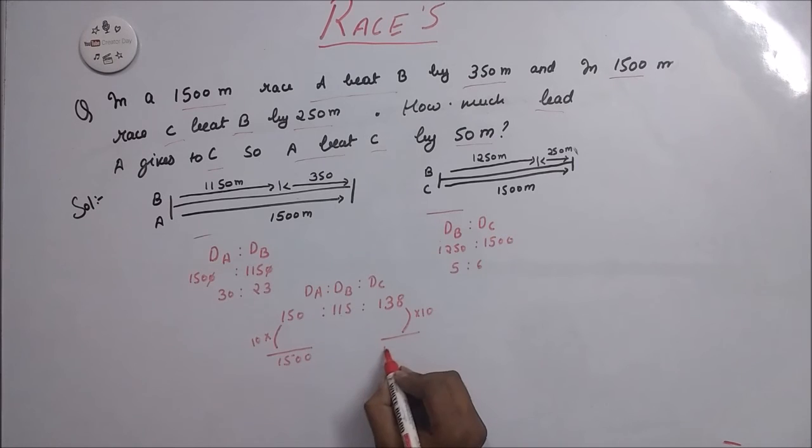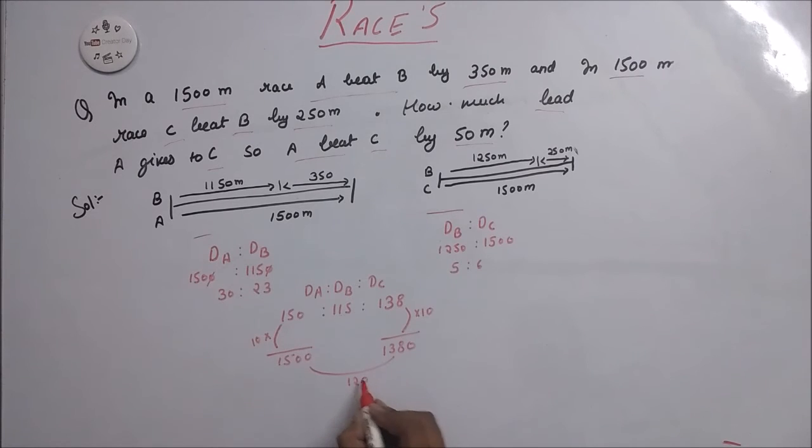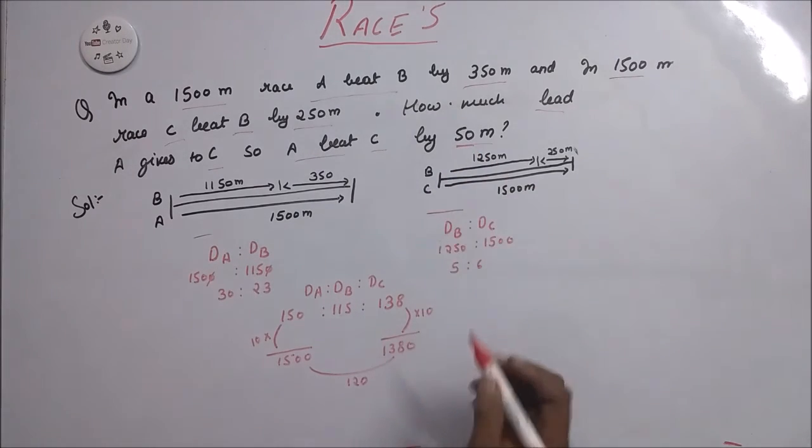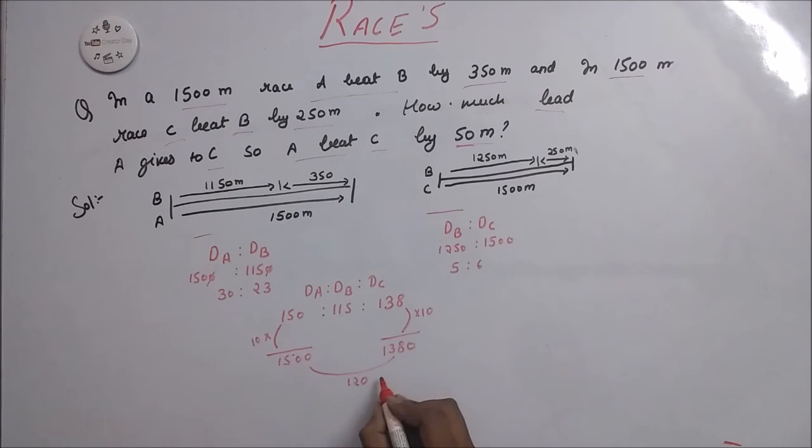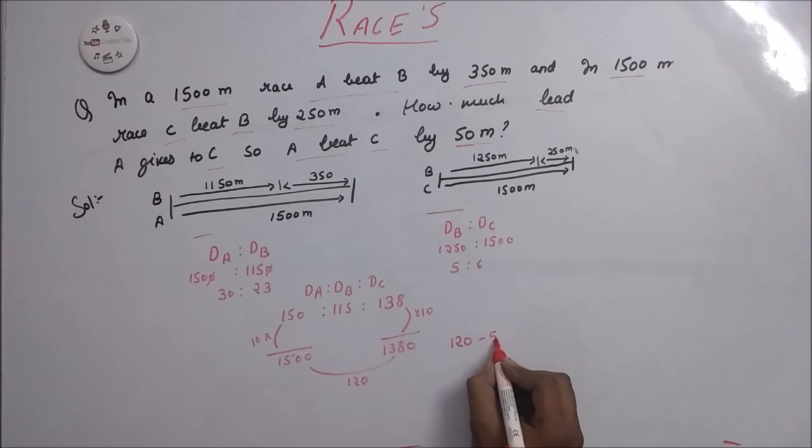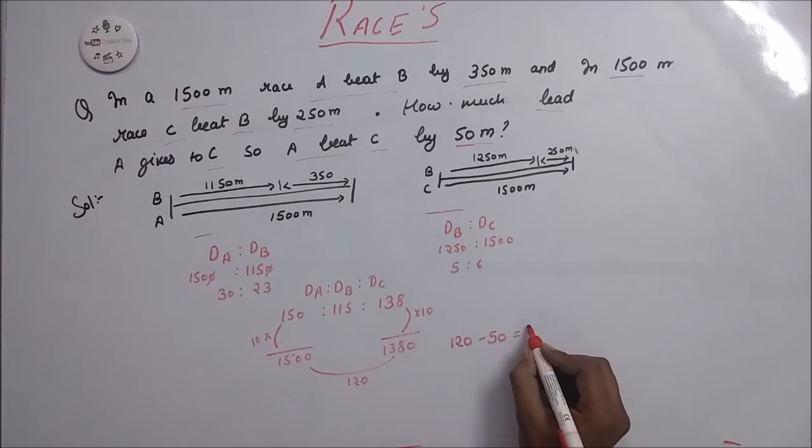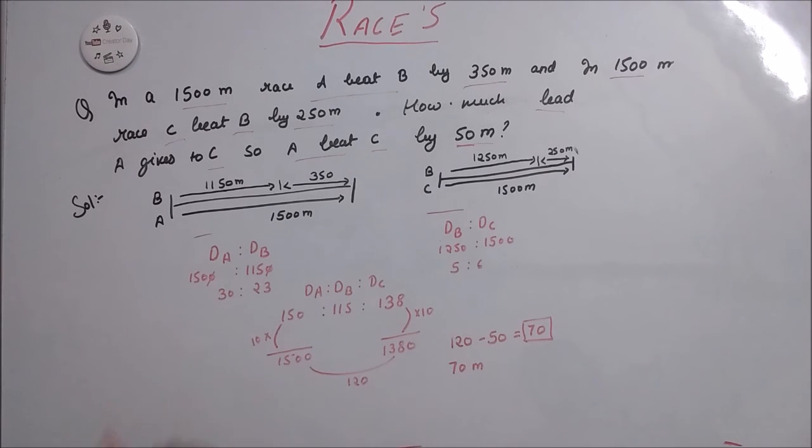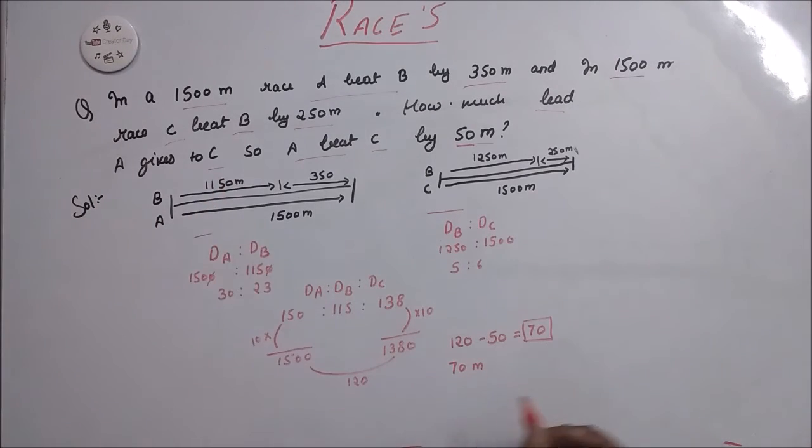The difference between them is 120 and 50 meters is given in the question. So 120 minus 50 is equal to 70. So 70 meters is the lead which A gives to C. This is your answer.